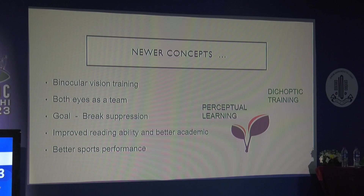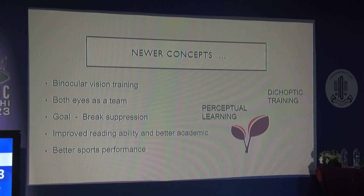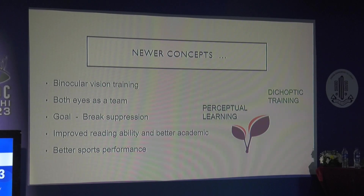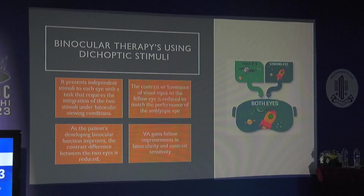The newer concepts based on perceptual learning and dichoptic training use binocular vision training where both eyes work as a team. The goal is to break suppression. Hand-in-hand improvements include better reading ability, better academic performance, and better sports performance.